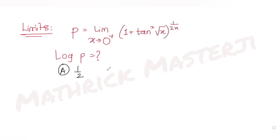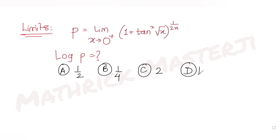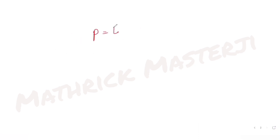The answer choices given to us are: one half, one over four, two, and one. So we need to figure out which one of the answer choices is correct. Let's talk about the expression: p is given as the limit as x tends to zero plus of (1 + tan√x) raised to 1 over 2x.